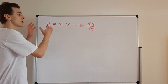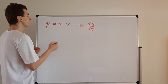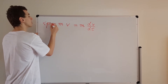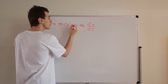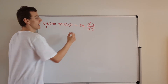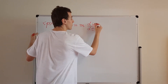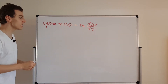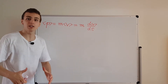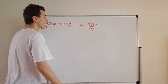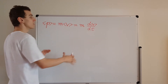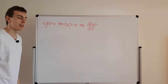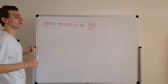So let's go ahead and turn these into expectation values. Instead of just having P, we can have the expectation value of P is m times the expectation value of the velocity. And that's going to be m times the time derivative of the expectation value of the position. We're going to postulate that this holds — this is our definition of momentum and the expectation value of velocity.